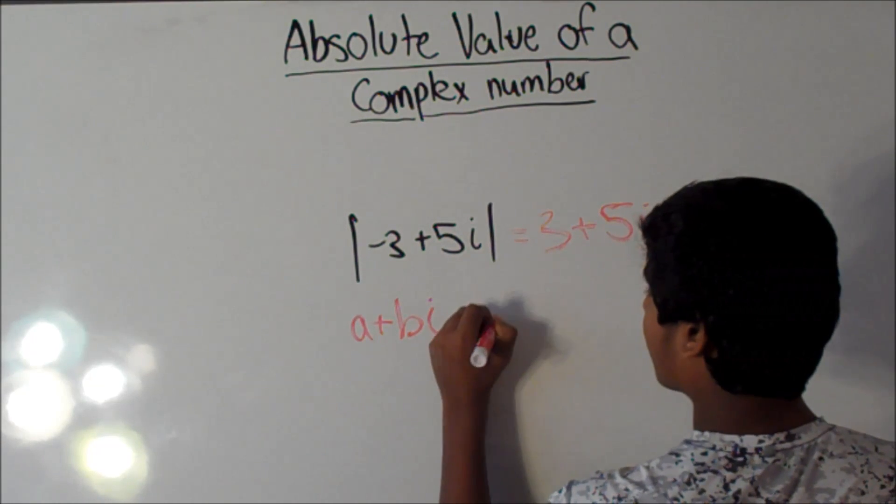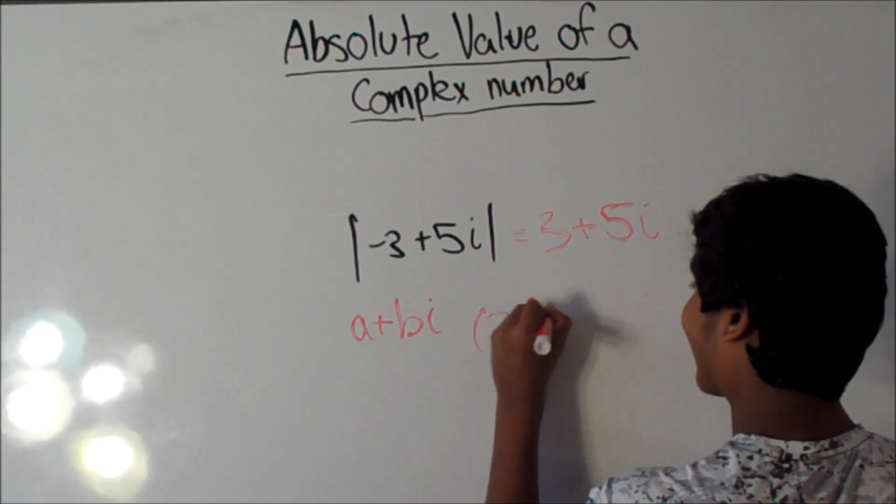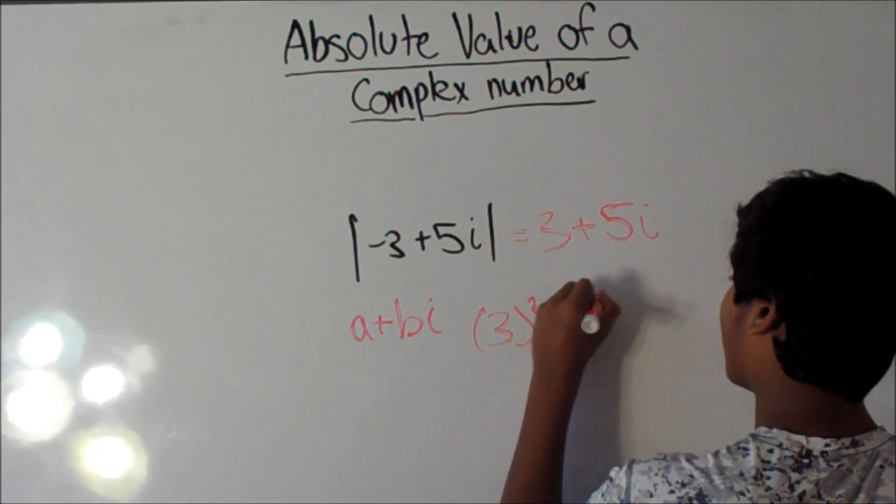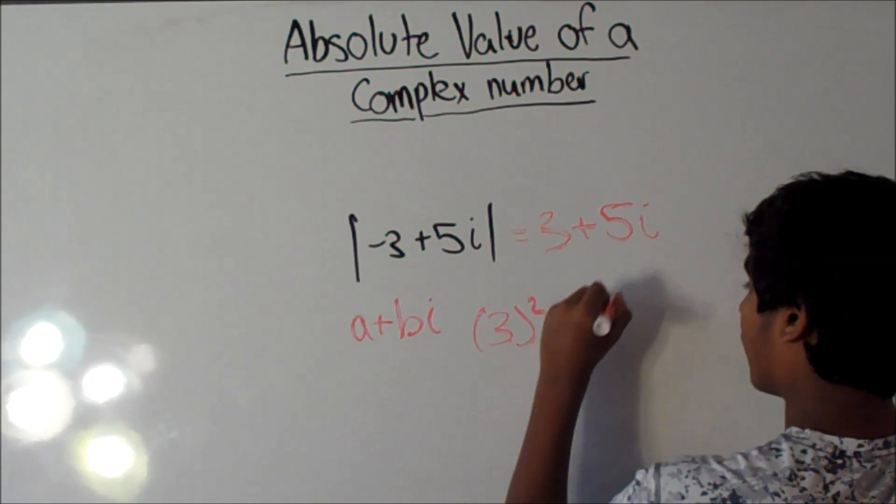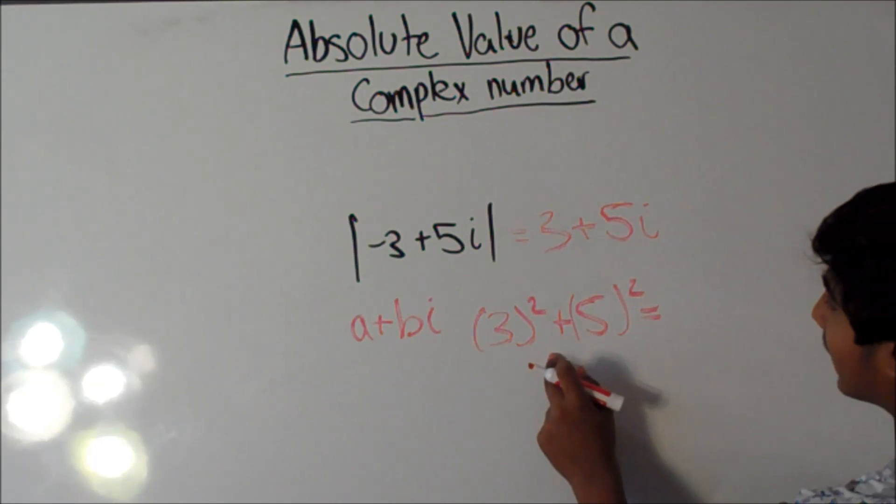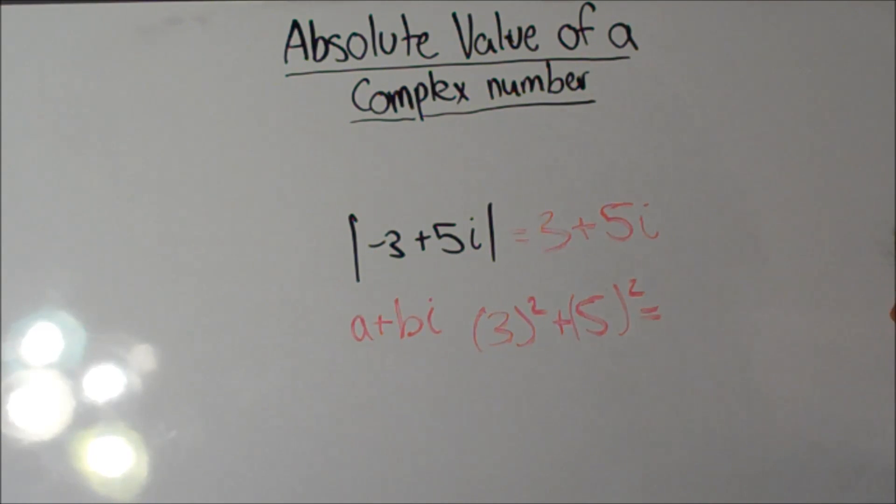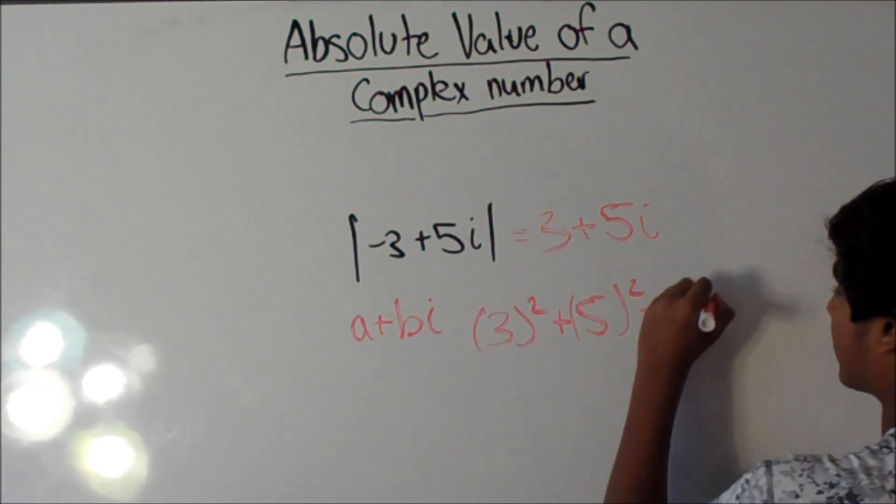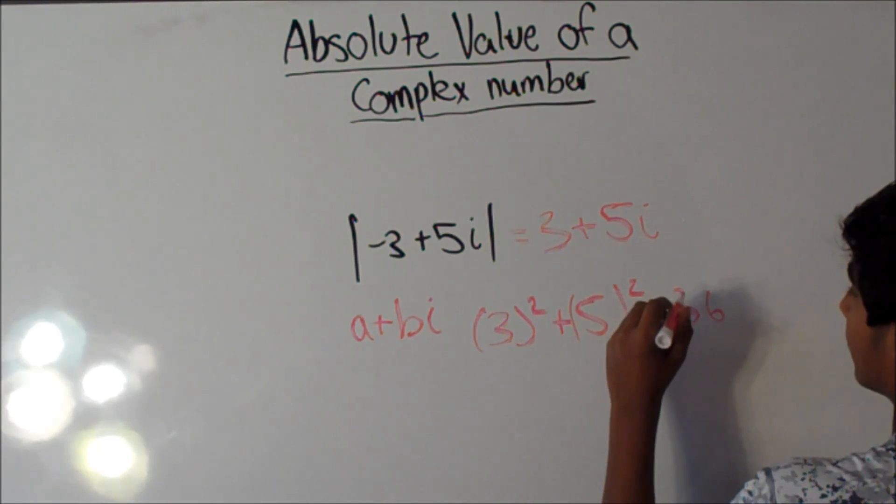So, we would do 3 squared plus 5 squared is equal to 9. 5 squared is equal to 25. That equals 36.